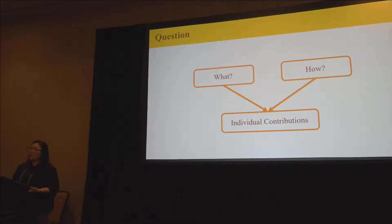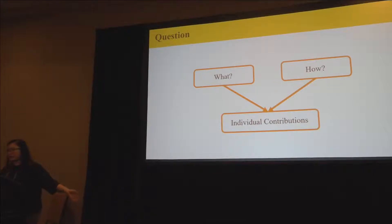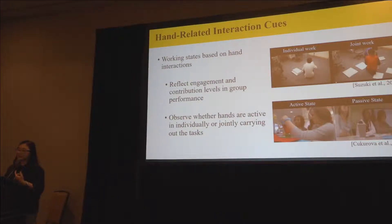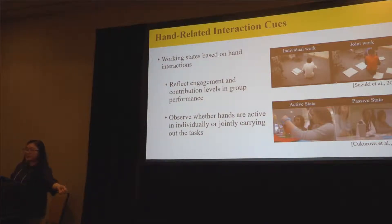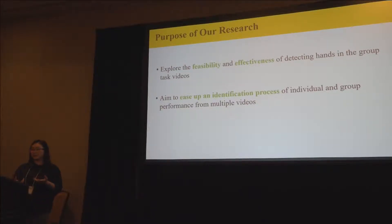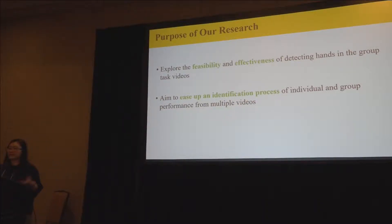It comes to our question: what behavioral markers should we detect, and how should they be detected to get data that is useful for analyzing and observing individual contributions? We found in prior studies that some research used hand interaction to define the working state for each individual, because hand interaction can reflect engagement and contribution level in group performance. We can observe whether the hands are active in individual action or joining and carrying out the task in the group. So our research purpose is to explore the feasibility and effectiveness of detecting the hands in the group task video, and also to ease the identification process of individual and group performance from multiple videos.